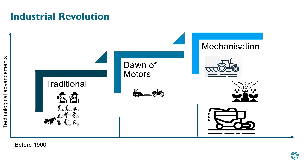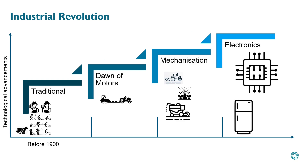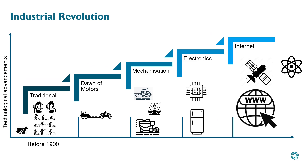The first industrial revolution brought mechanical production using water and steam power. Mass production through assembly lines and electricity were outcomes of the second industrial revolution. The third one is somewhat arguable, although most experts lean towards calling it the digital revolution, because it was around this time that we first began using electronics and IT systems.